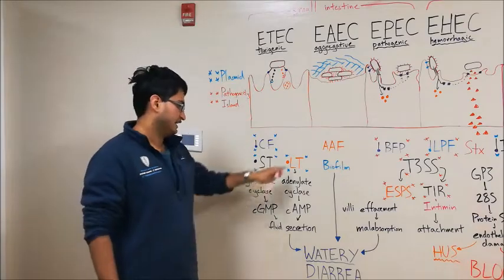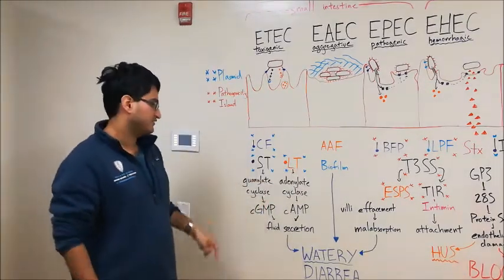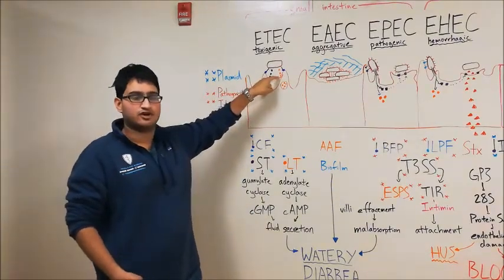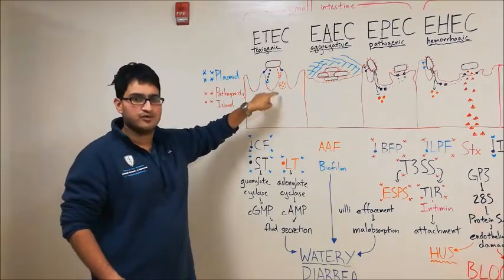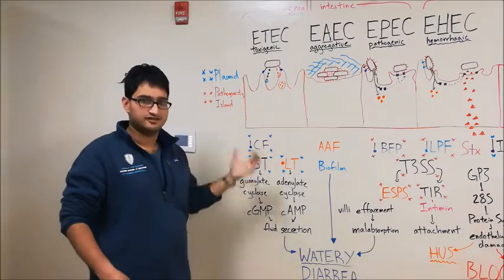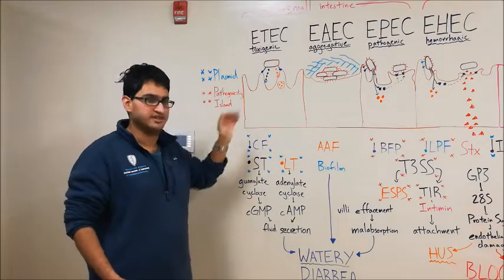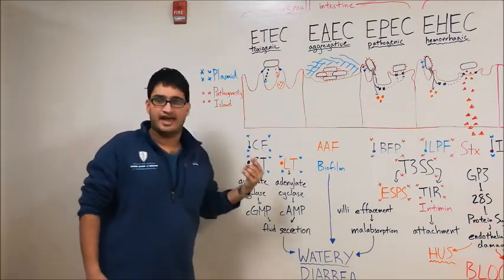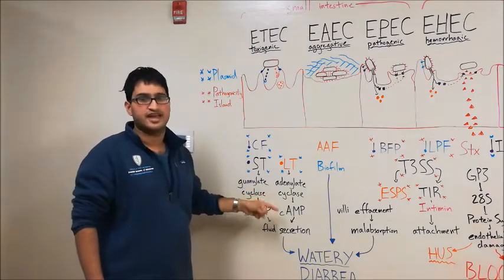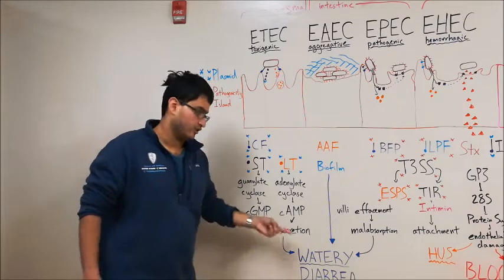Now let's talk about the other toxin, labile toxin. Labile toxin is an AB toxin. What that means is that the B subunit of this toxin will bind to a receptor on the outside of the enterocyte, and this will cause the whole toxin to get endocytosed. From there, the A subunit will eventually leave this endosome and get into the cytosol and enact its effects. It's going to ADP-ribosylate a G protein in the enterocyte, leading to permanent activation of adenylate cyclase. This enzyme is going to convert ATP into cyclic AMP. This will also lead to increased fluid secretion, leading to watery diarrhea.